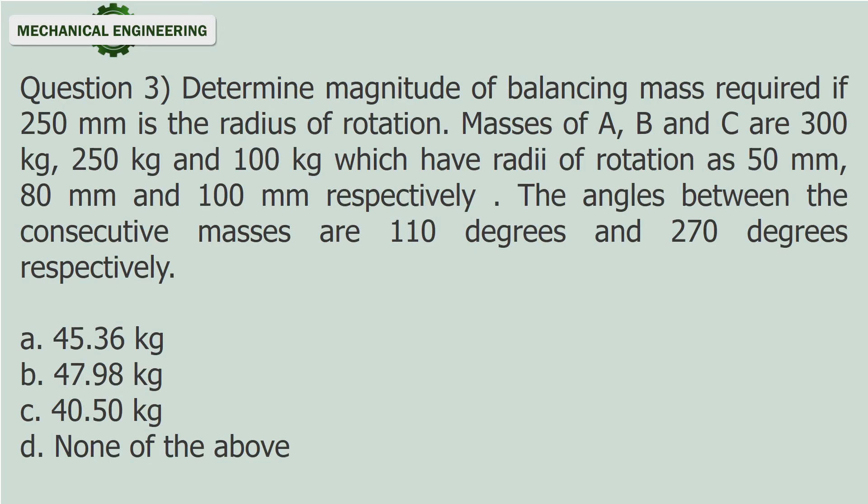Question 3: Determine magnitude of balancing mass required if 250 mm is the radius of rotation. Masses of A, B and C are 300 kg, 250 kg and 100 kg, which have radii of rotation as 50 mm, 80 mm and 100 mm respectively. The angles between the consecutive masses are 110 degrees and 270 degrees respectively.